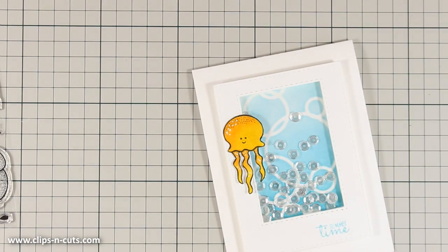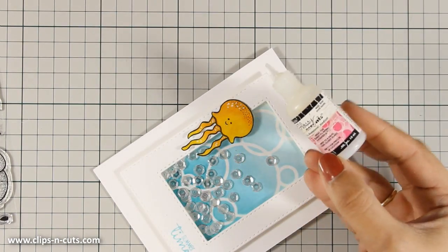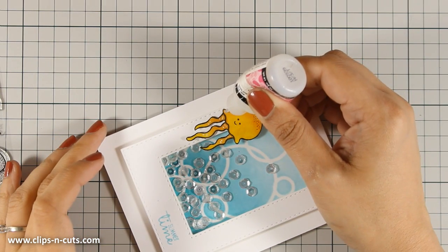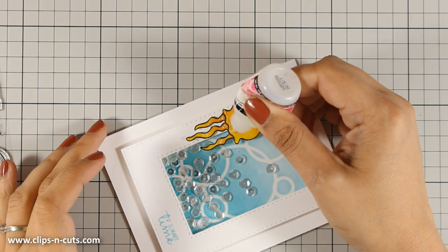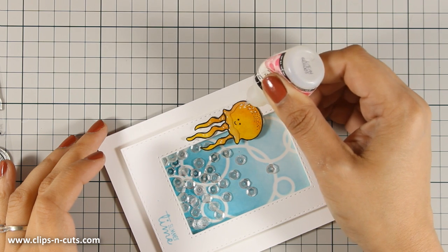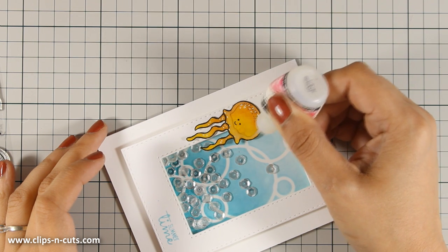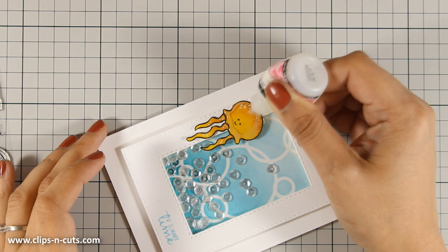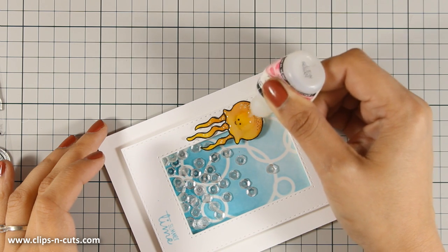And to bring the jellyfish even more to life, I am going to use some glossy accents over the main body of the jellyfish and this is going to make it super shiny. And although it looks kind of milky at the moment as I apply it, it will dry super shiny and very clear.